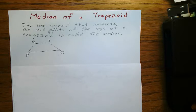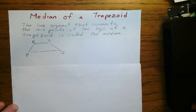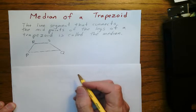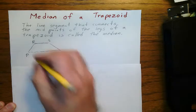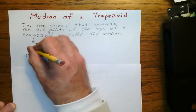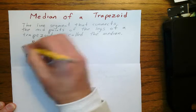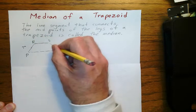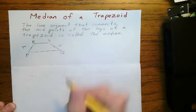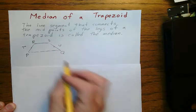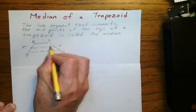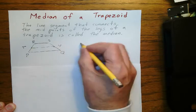The line segment that connects the midpoints of the legs of a trapezoid is called the median. So here's our trapezoid. If we say T is the midpoint of RP and U is the midpoint of SQ, then TU is the median.